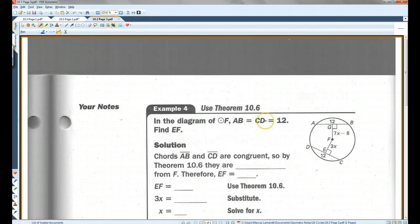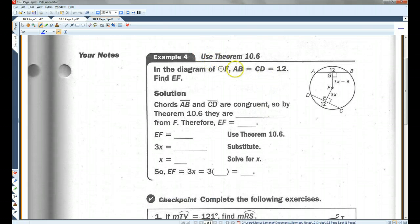Let's go on to page 3. In the diagram of circle F, AB equals CD equals 12. Find EF. Chords AB and CD are congruent, so by theorem 10.6, they are equidistant from F. Therefore, EF equals GF. So 3X equals 7X minus 8.